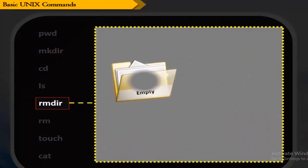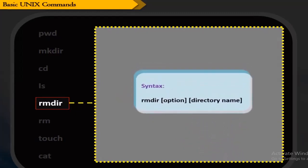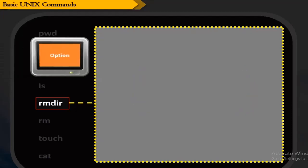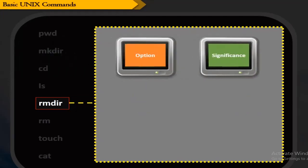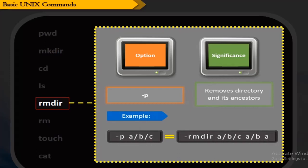The rmdir command is used to remove a directory or directories if they are empty. The syntax is shown here. The -p option removes the directory and its ancestors. rmdir can also be used to remove multiple empty directories at a time.